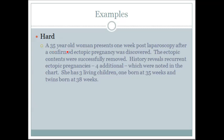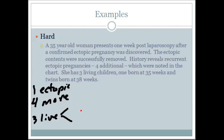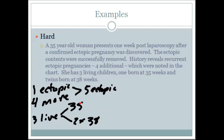Now for the hardest example. A 35-year-old woman presents one week post-laparoscopy after a confirmed ectopic pregnancy was discovered and the contents were removed — so she's had one ectopic. History reveals recurrent ectopic pregnancies: four more ectopics noted in the chart. She has three living children: one born at 35 weeks, and twins born at 38 weeks. In total, we have five ectopics, a singleton born at 35 weeks, and twins born at 38 weeks.